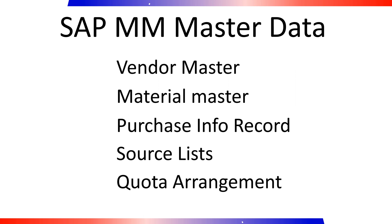In SAP Materials Management (MM), Quota Arrangement is a feature used to allocate procurement quantities for a material among multiple approved vendors. It allows you to define the percentage or quantity distribution for each vendor, specifying their respective share of the total procurement quantity. Quota Arrangement is commonly used when multiple vendors are capable of supplying the same material and you want to distribute the procurement among them based on predefined proportions.